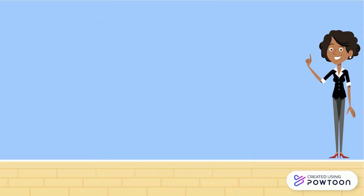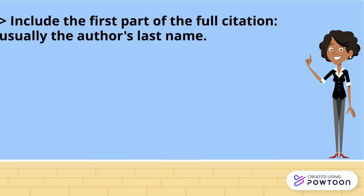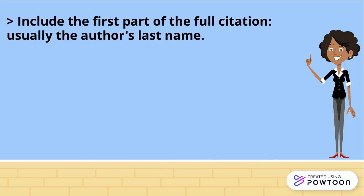A parenthetical citation should include the first part of the full citation, which is usually the author last name. If there is no author, use a shortened version of the source title for your in-text citation.